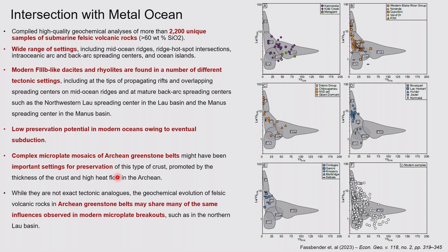One of the things they are thinking about is whether this microplate mosaic scenario is applicable to the Archean, because we have thicker crust and more heat. That might be why these are preserved in the Archean record rather than the modern. After compiling that and looking at it, we can compare that to the ancient record — and that's what Mark also did. We can see there's a lot of these things that share the same features here, like the whole range.